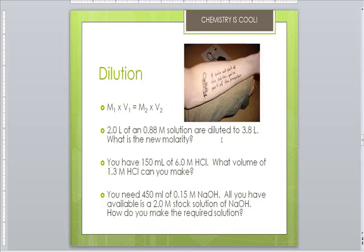Dilution is adding solvent to a solution. The number of moles of solute doesn't change if you just add more solvent, so the moles before equals the moles after. Therefore you can write M₁V₁ equals M₂V₂, because the number of moles is the same. M is the molar concentration and V is the volume.